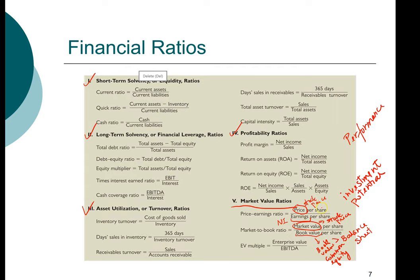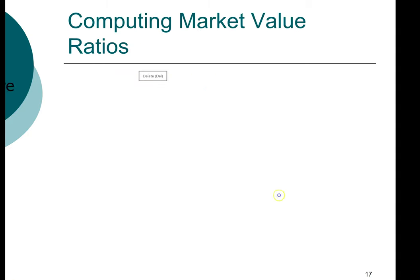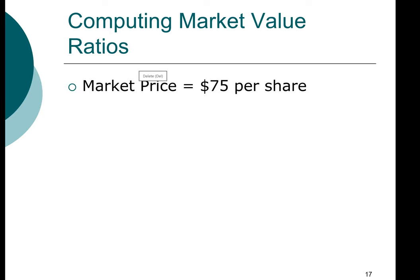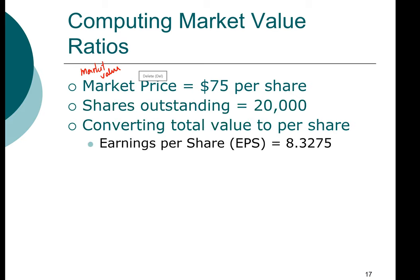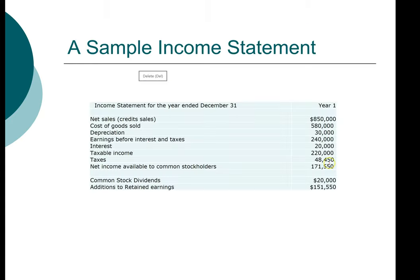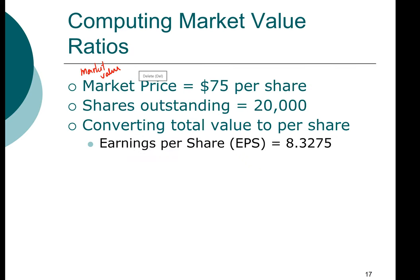Now let's look at how we convert total book value into a per share basis. In this example, we have assumed that the market price is $75 per share, and the number of shares outstanding for this company is 20,000 shares. We're going to convert net income into earnings per share. For earnings per share, we take net income of $171,550 divided by 20,000 shares outstanding. So our earnings per share is $8.3275.